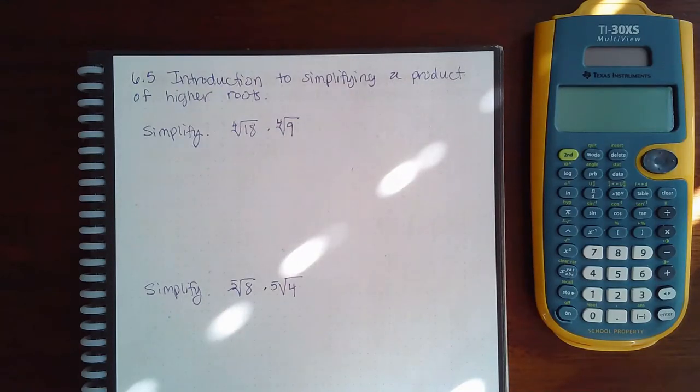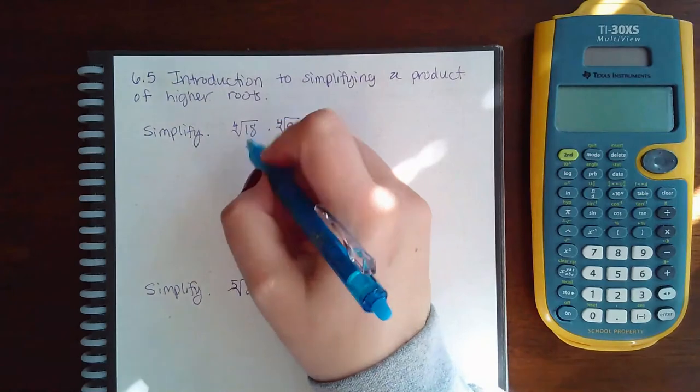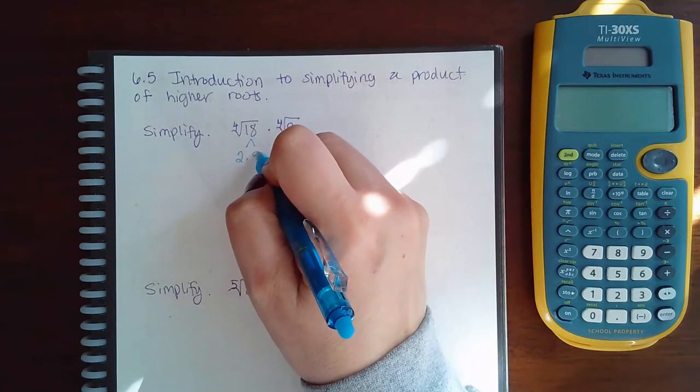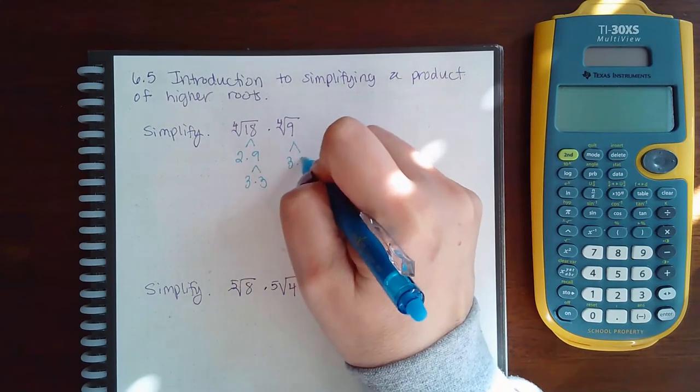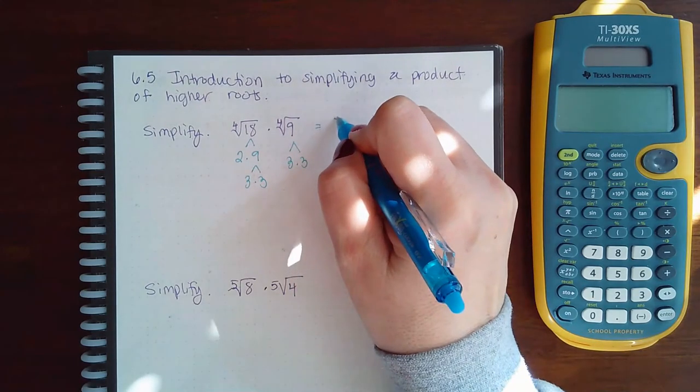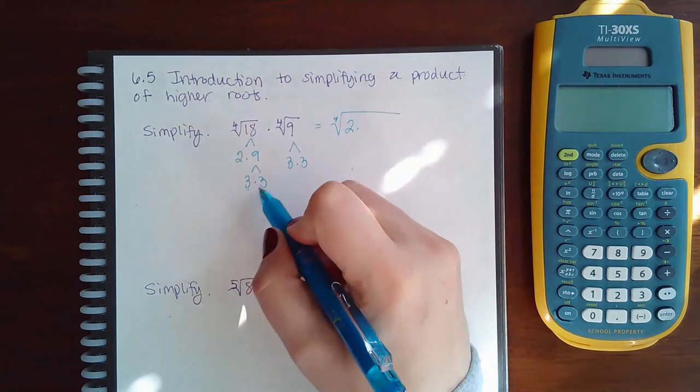6.5 introduction to simplifying a product of higher roots. Everything is the same, the only thing different is that you have a different index to divide by. So if I break up 18, that's going to be 2 times 9, which is 3 times 3.